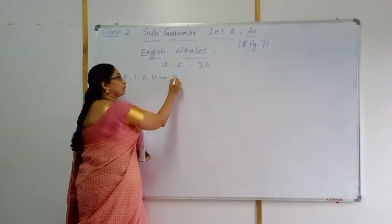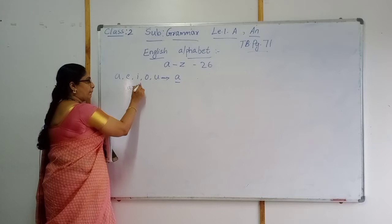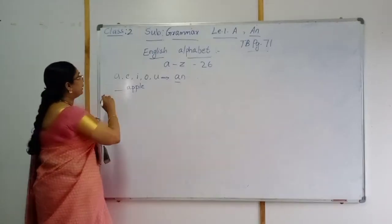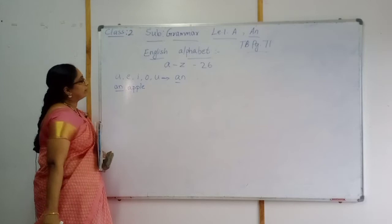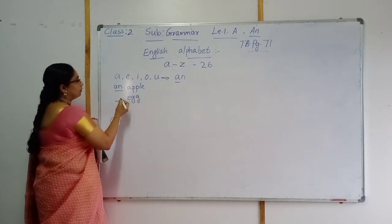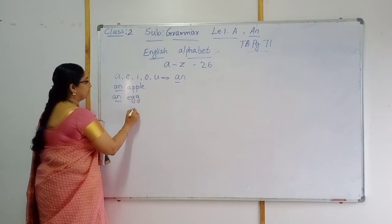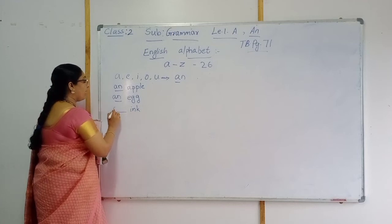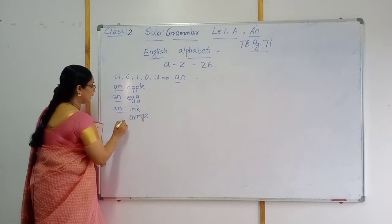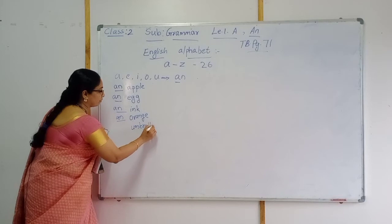We should write AN before the word. For example, what is the first letter here? A-P-L — apple. So, how will we say? An apple. We should use AN. Again, E-G — egg. What will we use there? An. Then I-N-C — inch. What will we use there? An. Next, O — orange. What will we use there? An. Next, umbrella. What will we use there? An.